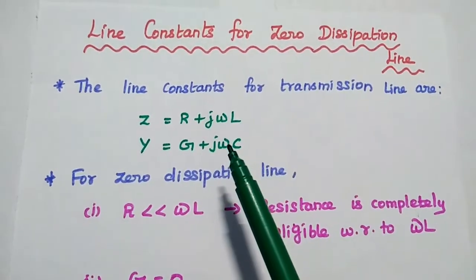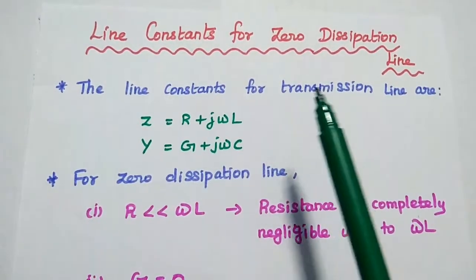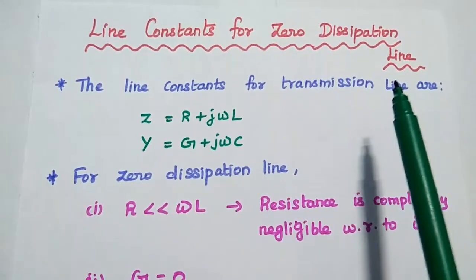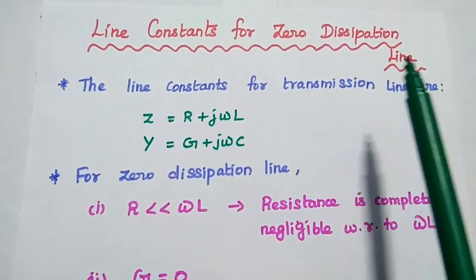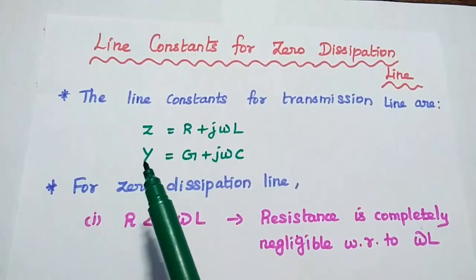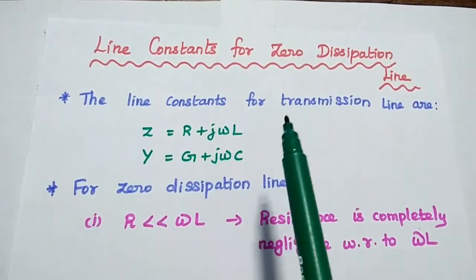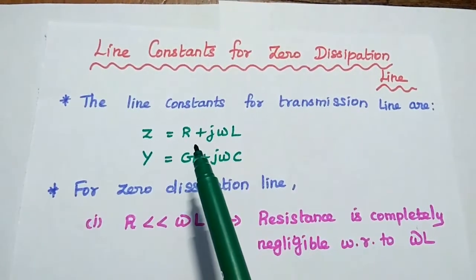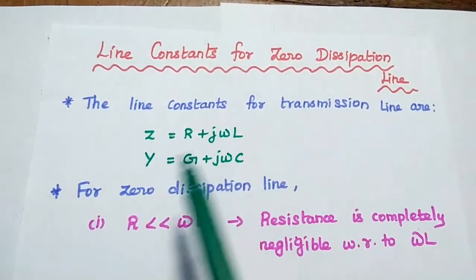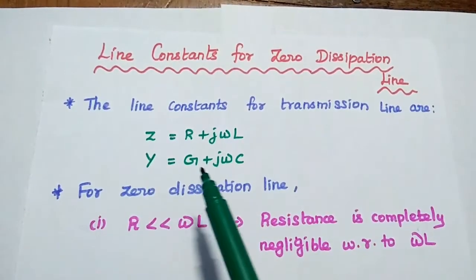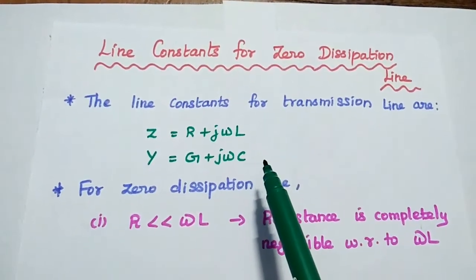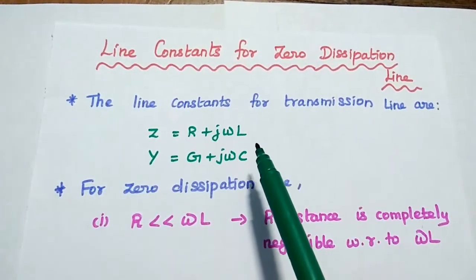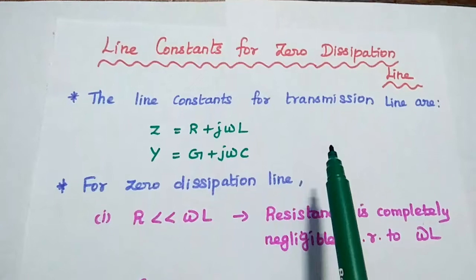Dear students, we are going to discuss line constants for zero dissipation line. Zero dissipation is also known as dissipationless line. In general, the line constants for a transmission line are given as series impedance Z equal to R plus j omega L, and shunt admittance Y equal to G plus j omega C. These two are the general expressions for Z and Y for a transmission line.